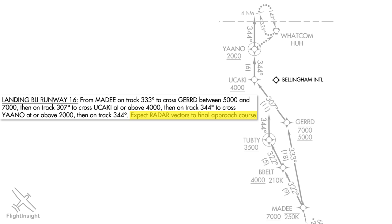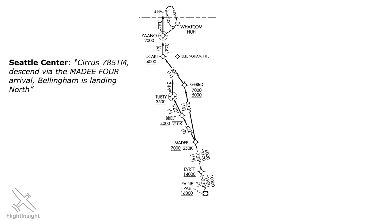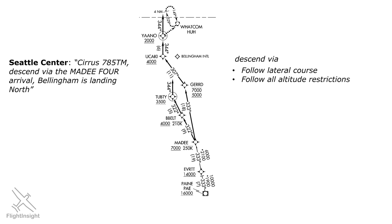Let's talk about the different ways ATC will instruct us to fly this arrival. We'd be on the enroute portion talking to Seattle Center, who would say: 'Cirrus 785 Tango Mike, descend via the MADI-4 arrival, Bellingham is landing north.' What does 'descend via' mean? It means three things: follow the lateral course as depicted, follow all altitude restrictions, and follow all speed restrictions. In short, do what the arrival plate says. Note that 'descend via' doesn't mean descend right now — this is where descent planning comes in. Center has also told us the airport landing direction so we know which transition to fly.